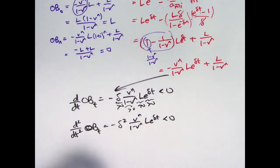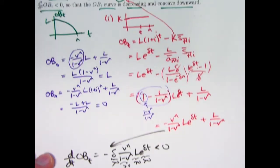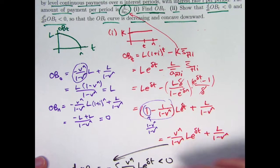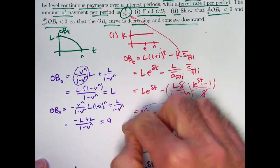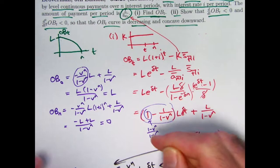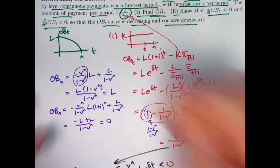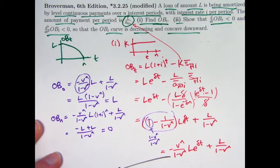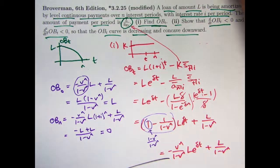So we've verified that both derivatives are always negative, confirming that the graph of the outstanding balance is decreasing and concave down. This matches what we said the graph looks like, and it holds in the discrete case as well — except in the discrete case you don't connect the dots, you just have a series of points with that same shape.